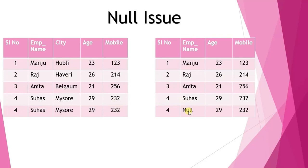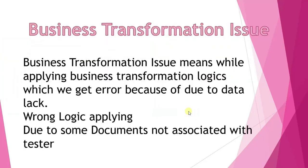Moving to business transformation issues: while applying business transformation logic we can get errors due to a lack of accurate data from the source file. If we blindly apply business logic and the source data is lacking, we are unable to load the data perfectly into the target table. Also, applying wrong logic due to complex situations can make it very difficult to analyze the data in the business intelligence layer.